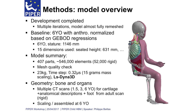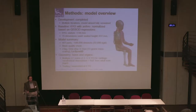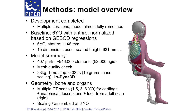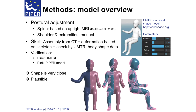The development is now completed. After multiple iterations, we pretty much remeshed the whole model. The baseline model is a six-year-old size anthropometry, scaled based on GBUD regressions. It's about 400 parts and 550,000 elements — not so big by today's standards. Geometry, bones, and organs are based on various CT scans assembled at the six-year-old size. We had to do some repositioning because scans are not in the right position, and then we checked on the final skin of the model.